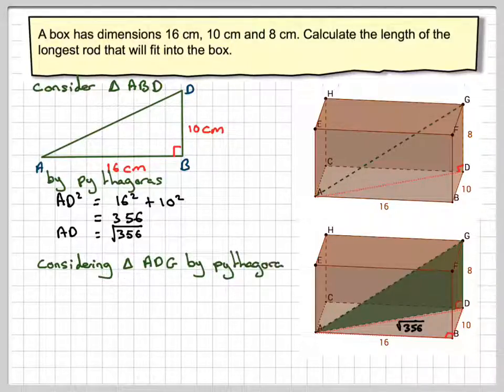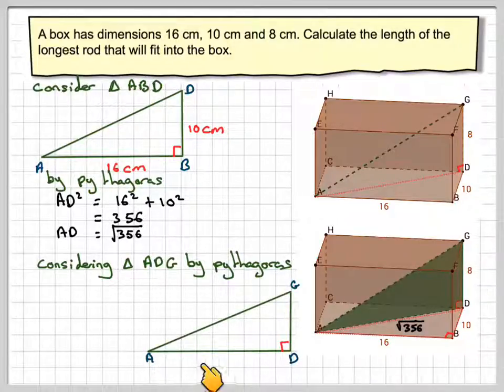And now we're going to consider the green triangle, ADG, by Pythagoras, again drawing it out. You should always try to draw out the two-dimensional triangle first. So ADG. This length here is the square root of 356. This length here is 8.